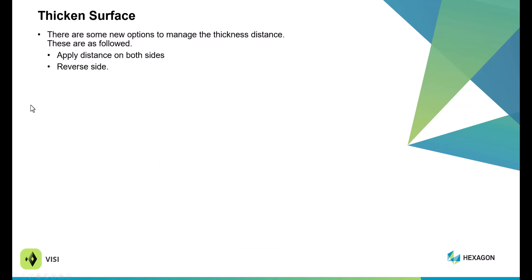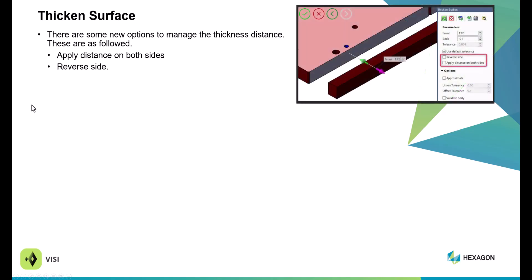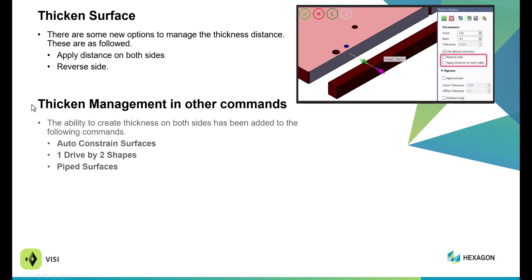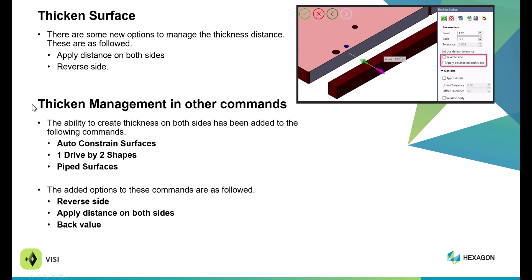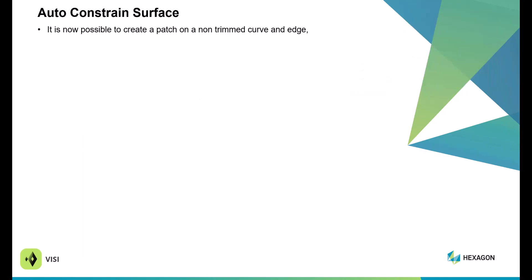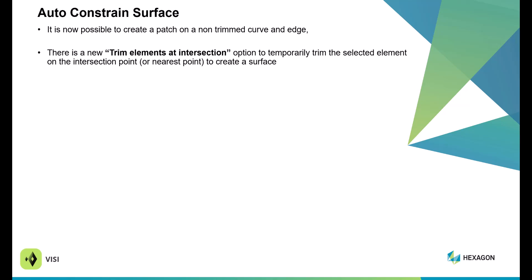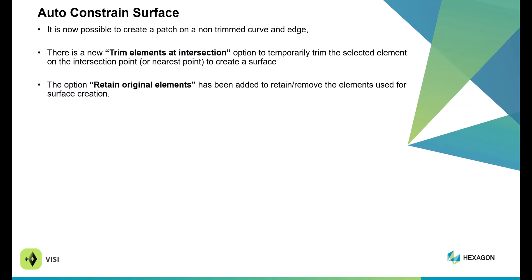Within Thick Surface, there are new options for managing thickness distance — you can apply on both sides as well as reverse side. With thickness management in other commands such as auto-constrained, one drive by two shapes, and pipe surface, added options include reverse side, apply distance on both sides, and back values. Within auto-constrained, it is now possible to select a non-trim curve or edge to build a surface off of. New options include Trim Elements at Intersection Point, which temporarily trims in a selected element on the nearest point, and Retain Original Elements, which retains or removes original elements based on the checkbox.